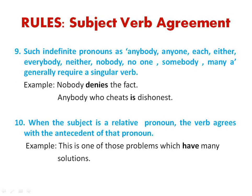Rule 9: indefinite pronouns like 'anybody,' 'anyone,' 'each,' 'either,' 'everybody,' 'neither,' 'nobody,' 'no one,' 'somebody,' and 'many' generally require a singular verb. For example, 'nobody denies a fact' — since we use the pronoun 'nobody,' we use the singular verb 'denies.' Similarly, 'anybody who cheats is dishonest.'